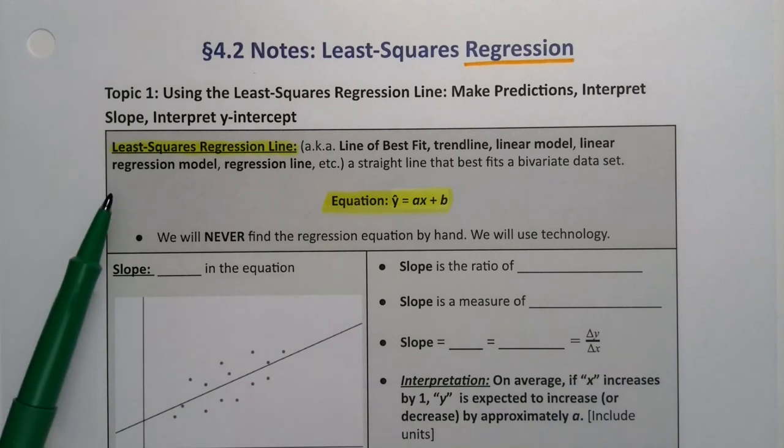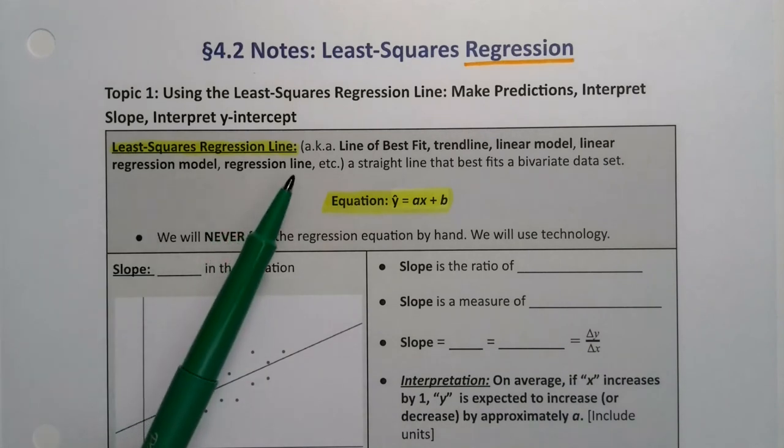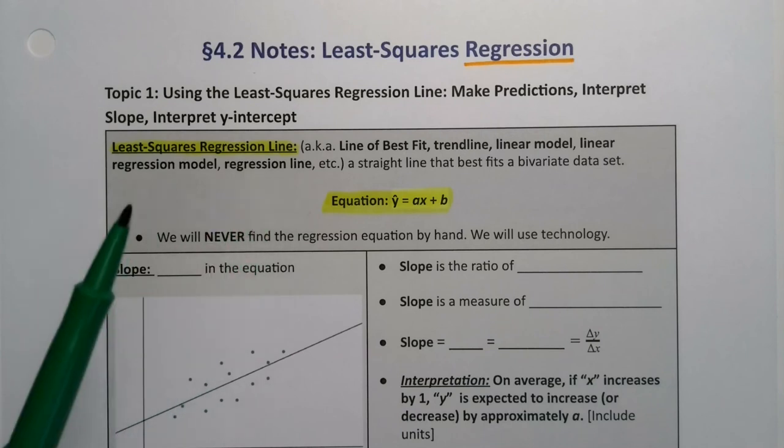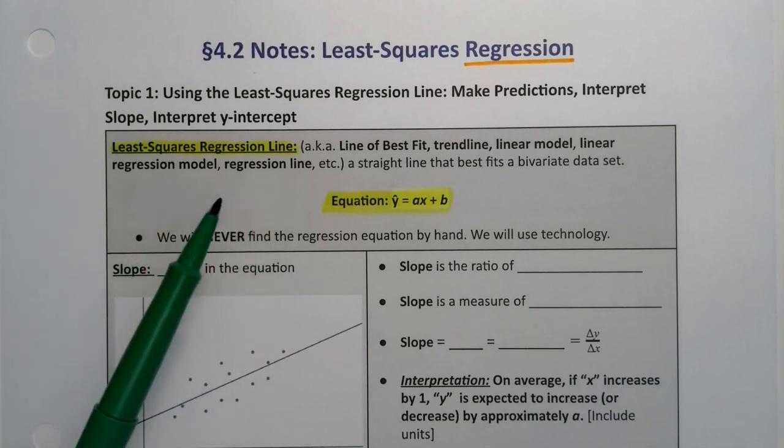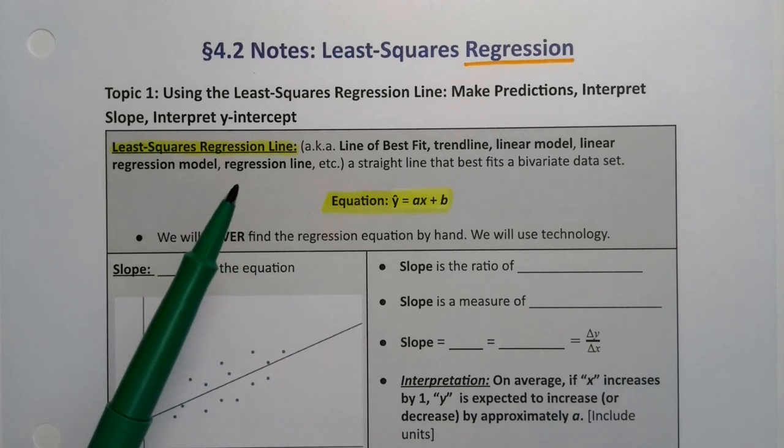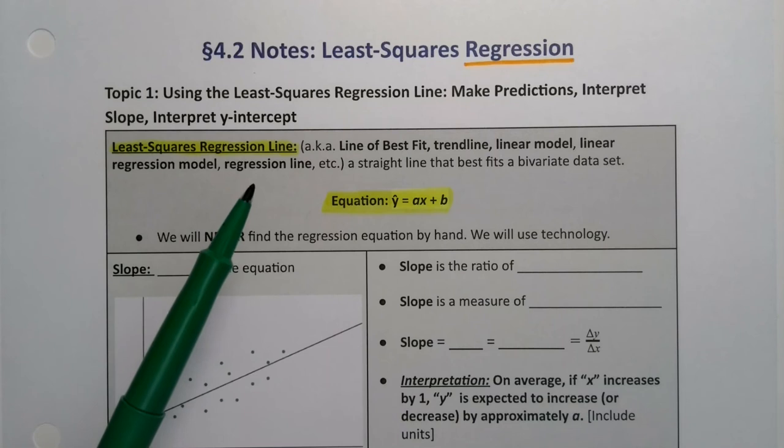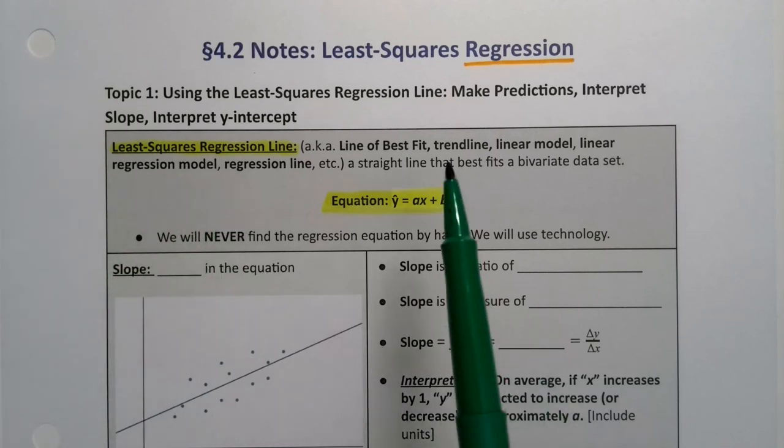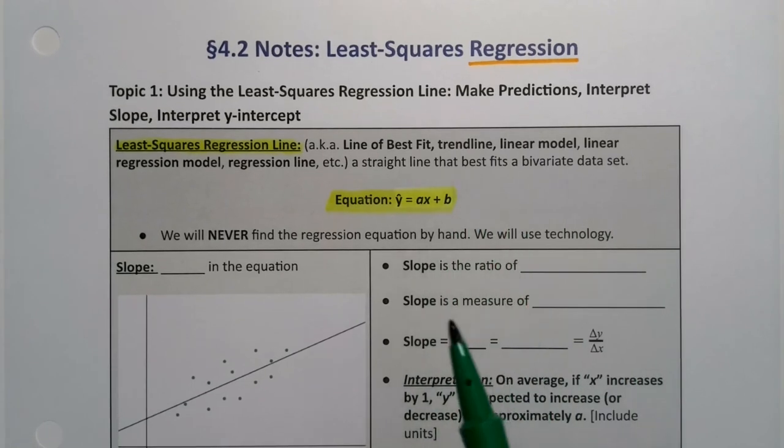Let's begin with the least squares regression line. It's also known as the line of best fit, the trend line, the linear model, linear regression line, linear regression model, the regression line, etc. It has a lot of names. Basically, for our purposes in our class, it's the line - the line that we're using, the line of best fit. It's a straight line that best fits the bivariate data set.